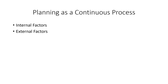Let us look at planning as a process. In planning as a process, we are going to look at it in two dimensions. First, we are going to look at the internal factor, and secondly, we are going to look at the external factor. These are the two factors we will examine.